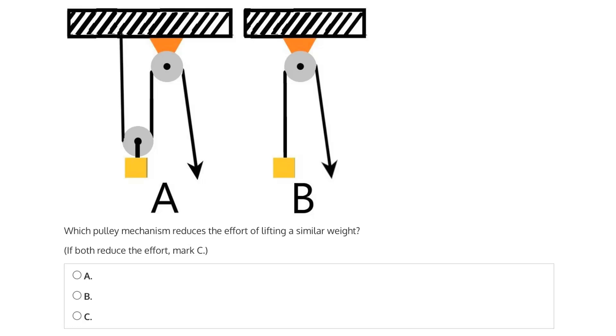To figure out which reduces the amount of effort, or in other words the force, we need to consider the tension. The tension will be equal to the weight of the load, which is similar in both A and B, and is exerting a downward force thanks to gravity.